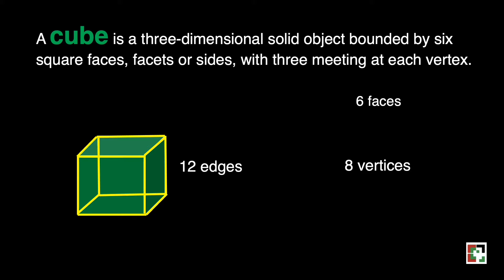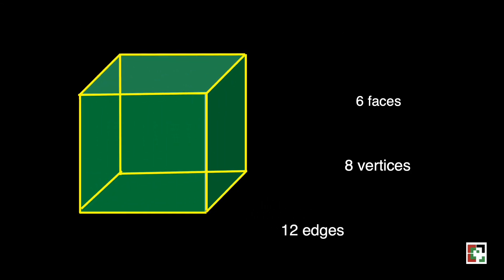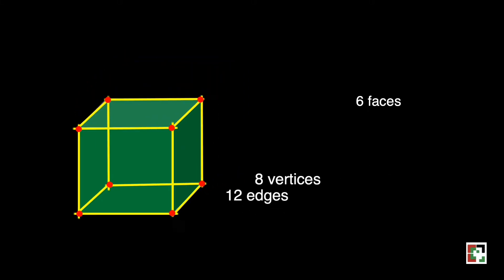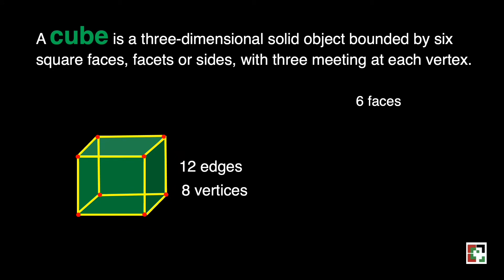Let's count the number of vertices. So we have six faces. And that's one, two, three, four, five, and six — that's front, back, right, left, top, and bottom. We have, all in all, six faces.